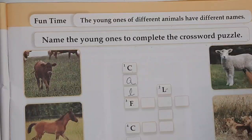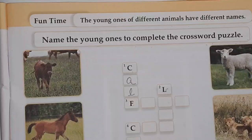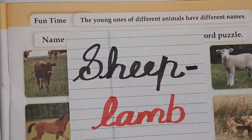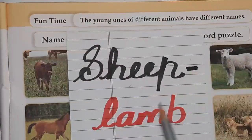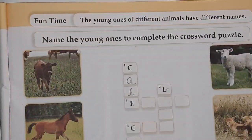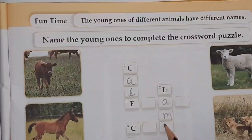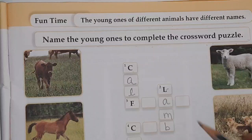So here you can see this animal. This is lamb — young one of the sheep. So the second answer is lamb: L-A-M-B. Lamb.